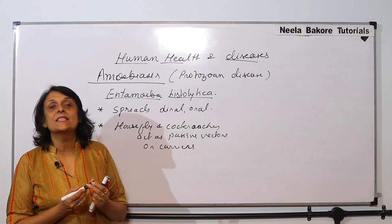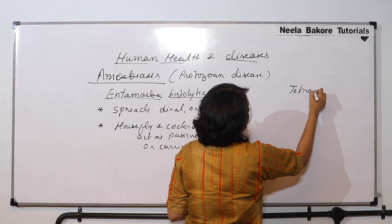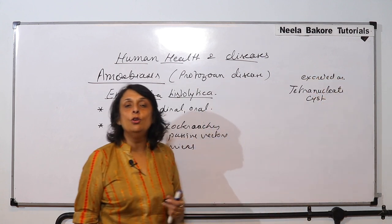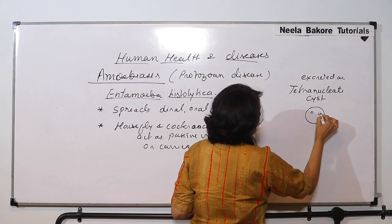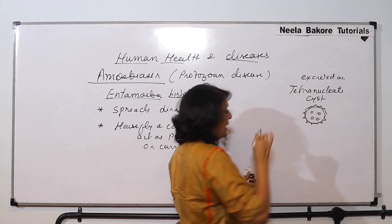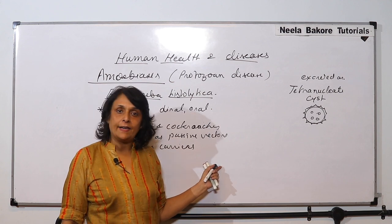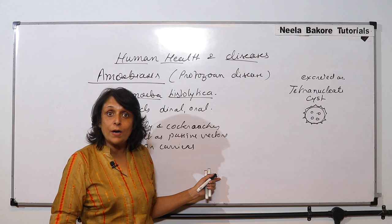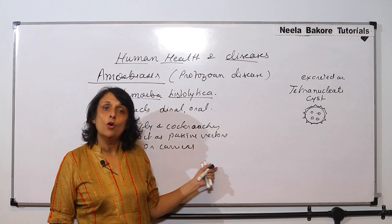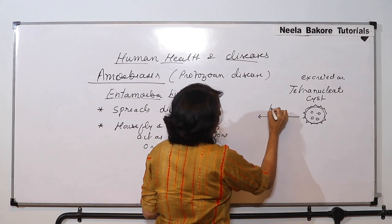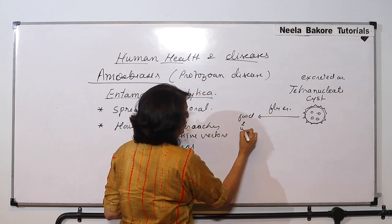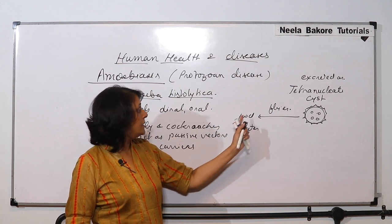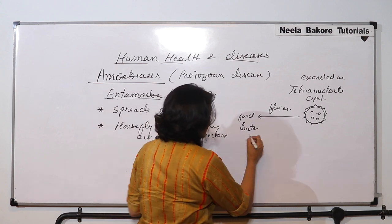The pathogen gets excreted in the form of a tetranucleate cyst — as the name tells us, there are four nuclei. This cyst is present in the fecal matter of the infected person. When house flies move from this fecal matter to food items, they passively carry the cyst to our food. So if our food and water is contaminated with this fecal matter, the cysts are there, and when we eat or drink it orally, the cyst enters our body.